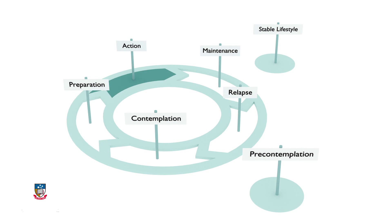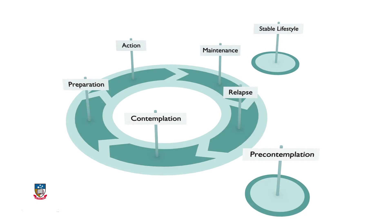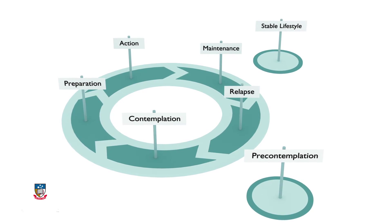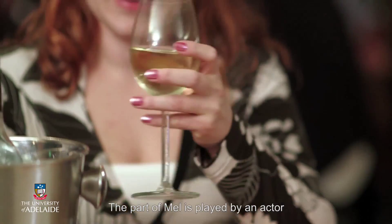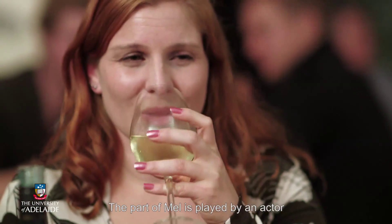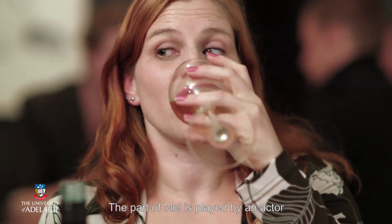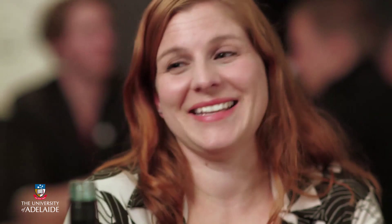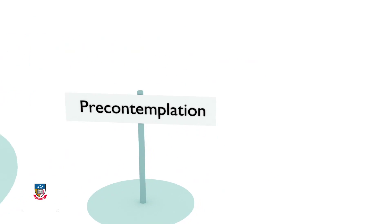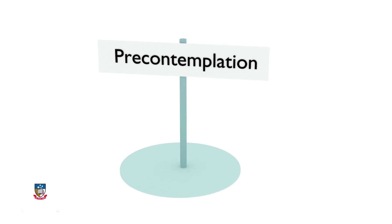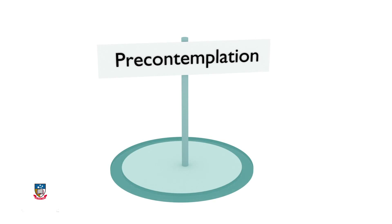This is important when we consider how ready somebody is to make alterations to their substance use. The ASSIST-linked brief intervention aims to help people as they move through one or more stages of change. So let's take a closer look at Mel's journey in relation to this model. We could see that Mel was in the pre-contemplation stage when she was out happily drinking with her friends.